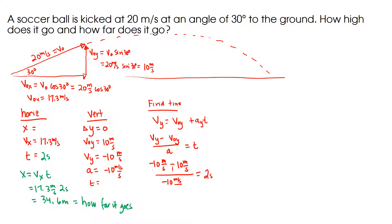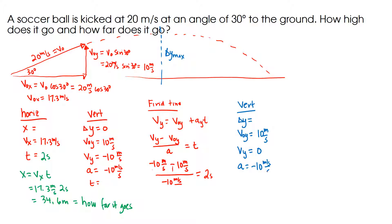Now to find how high it goes, I'm only going to take half the journey, because half the journey is when I am at delta-y maximum. So I need to do a new vertical analysis. In the vertical, my delta-y is what I'm looking for. My v-initial is still the same. Here's an important change: my v-y is going to be zero, because at the top of the path I've stopped moving upward in the y-direction and I'm turning around and moving downward. Acceleration is still minus 10 meters per second squared, and t is going to be exactly half of what it was before because I'm only doing half the journey — so t is 1 second.